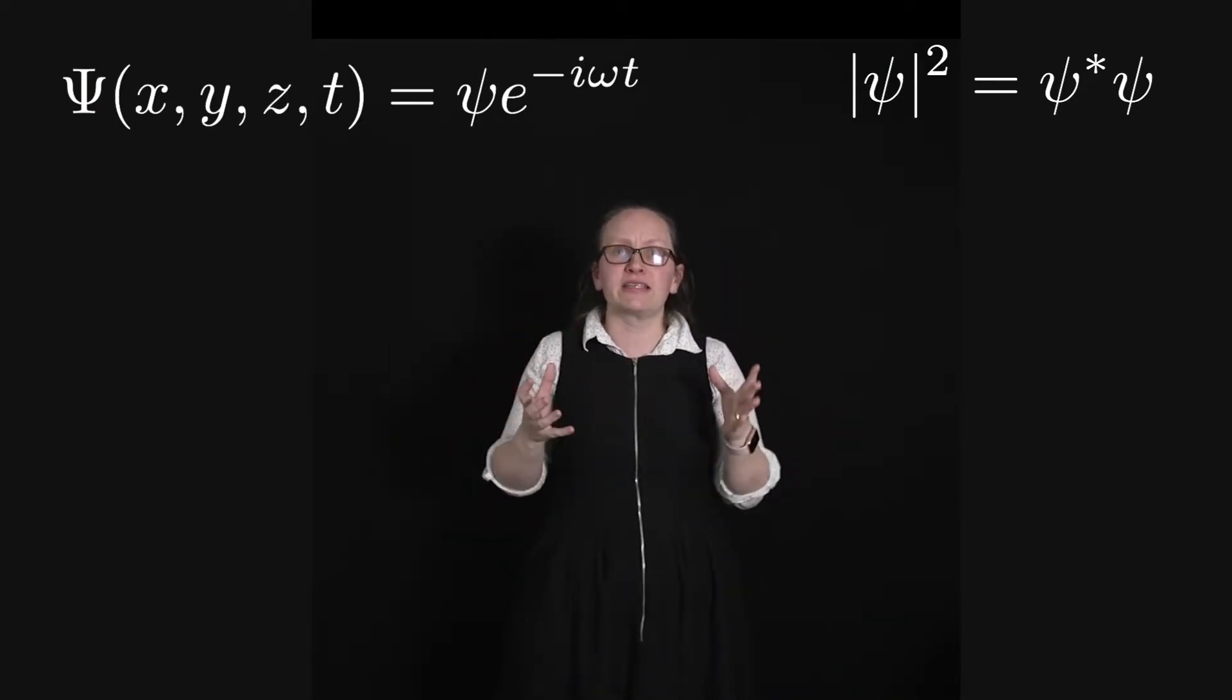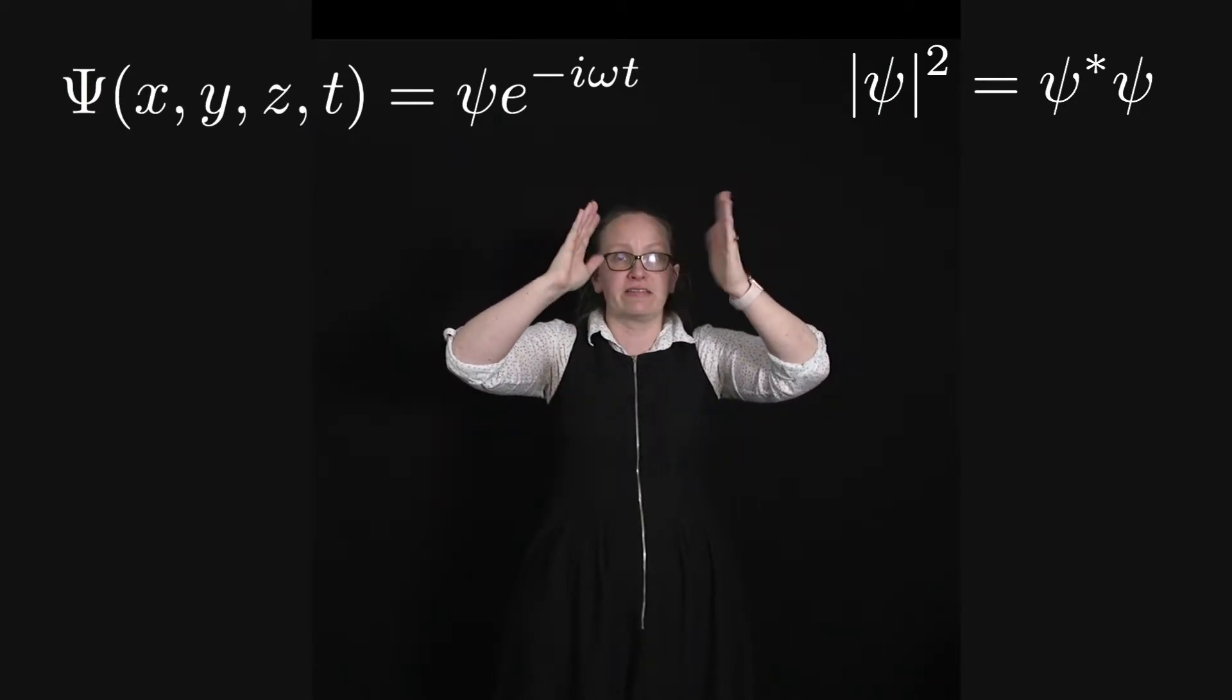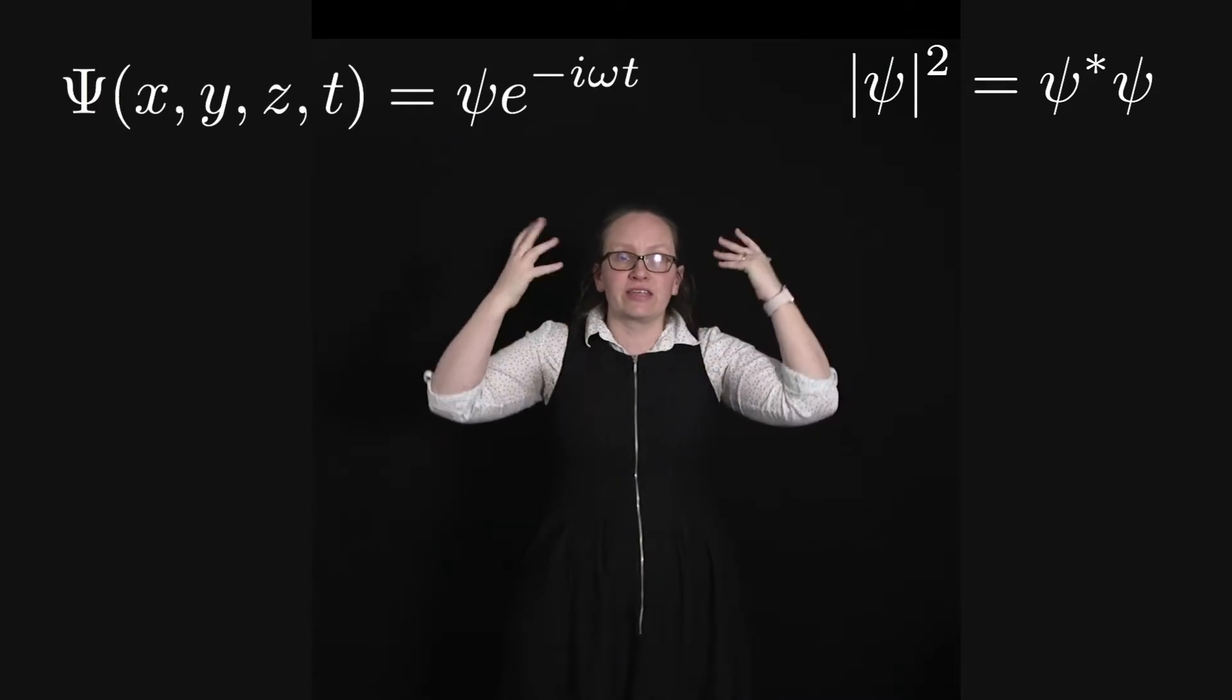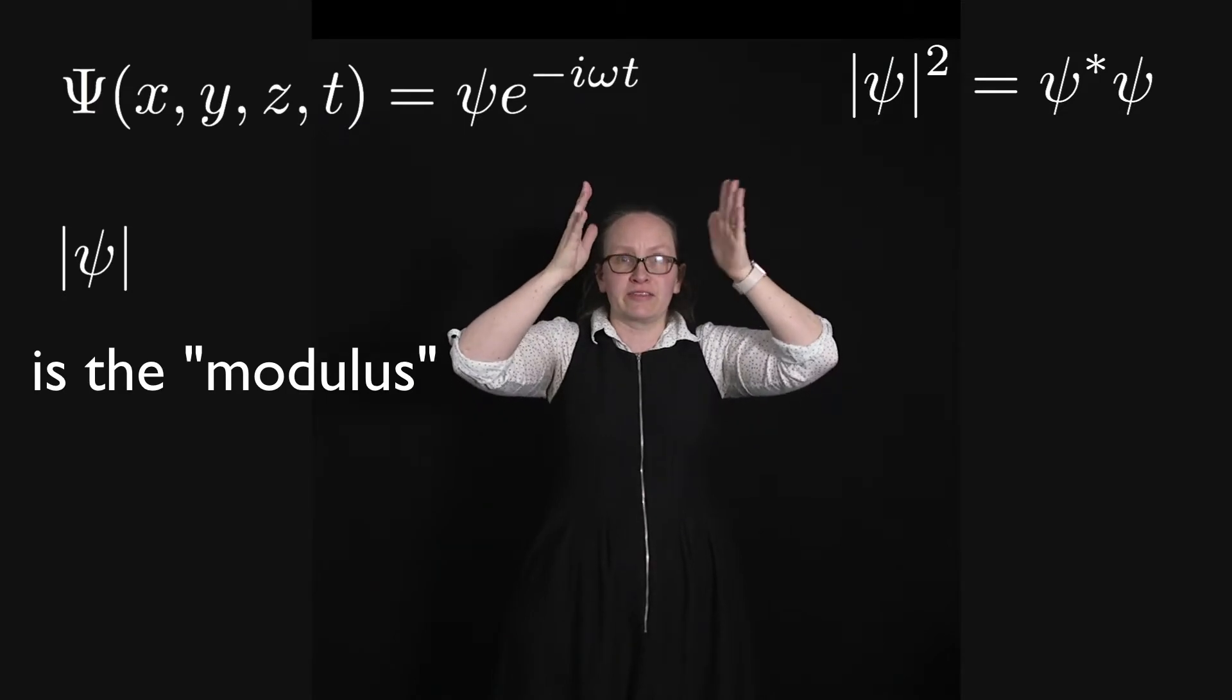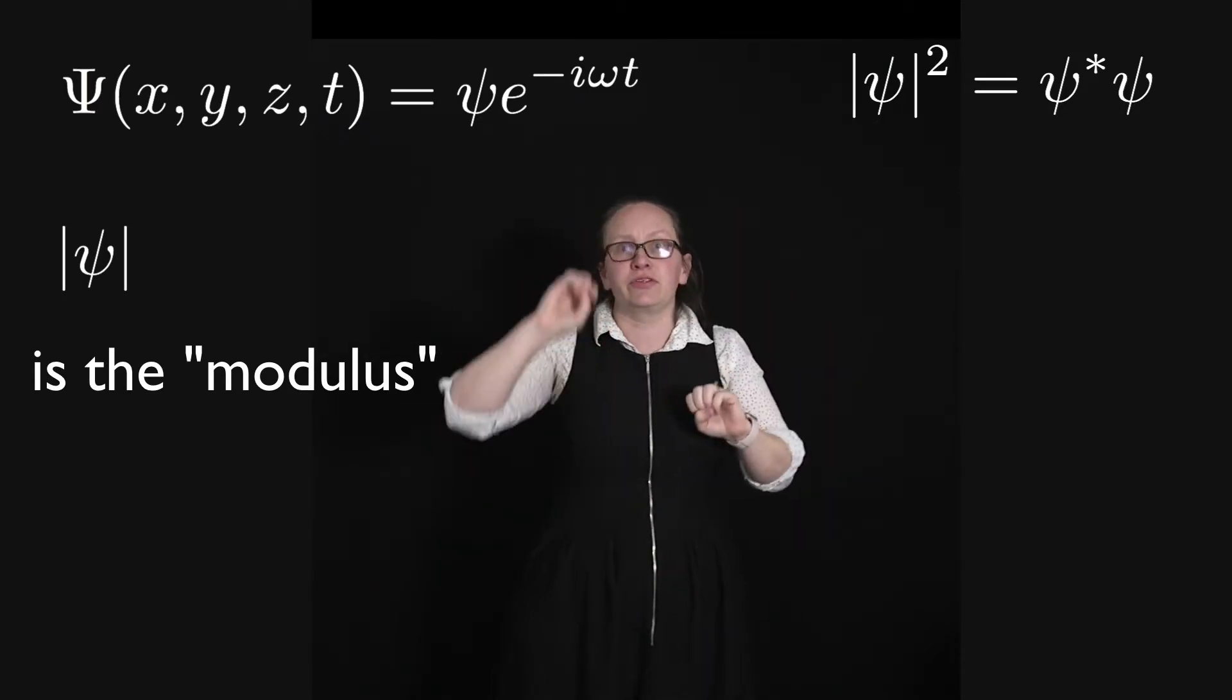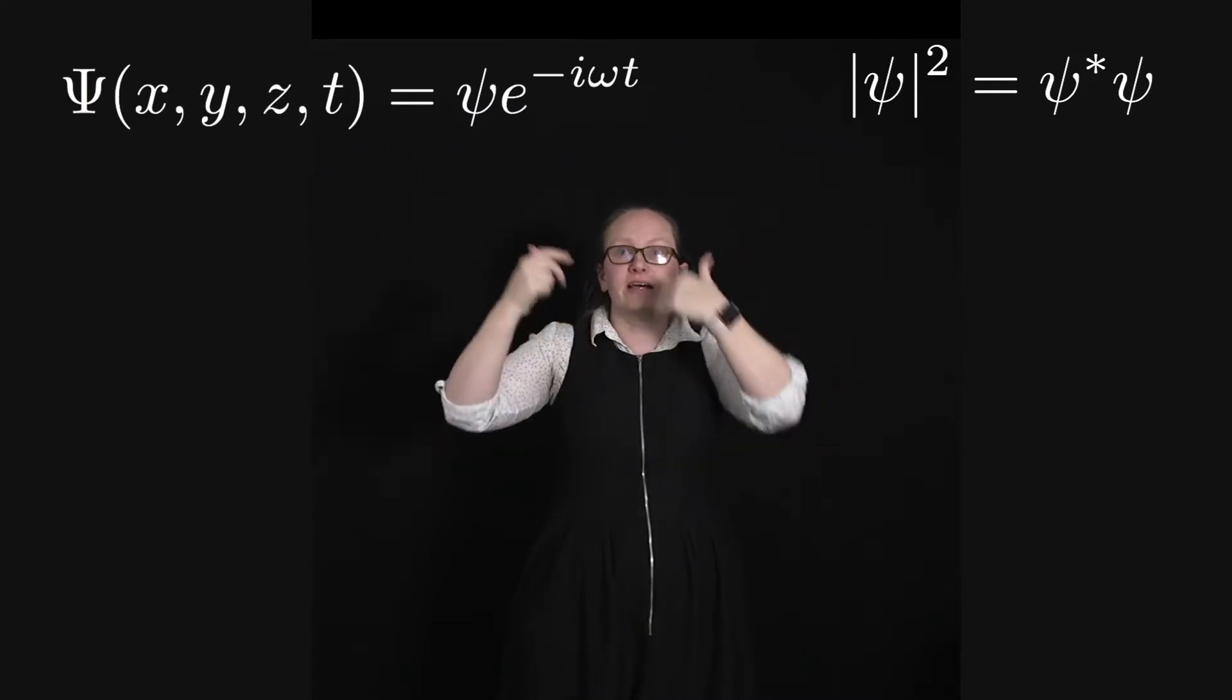So mathematically when we write the Psi with the absolute value signs around it, this is called taking the modulus of a complex number, and the absolute value of Psi squared is equal to Psi star Psi, or the complex conjugate of Psi times Psi.